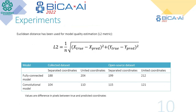For model quality estimation we use the Euclidean distance L2 metric. In the table, L2 errors are depicted for each model type. Using two convolutional models allows us to get a minimal error of 104 pixels — one of these models predicts only the X coordinate and another predicts only the Y coordinate.